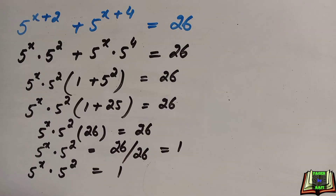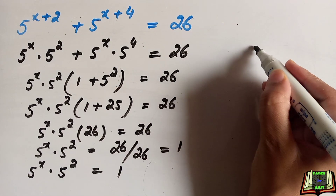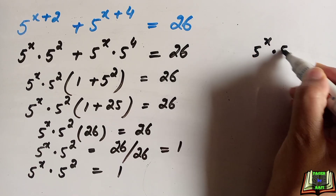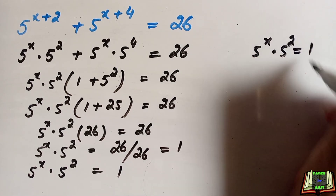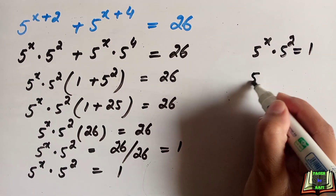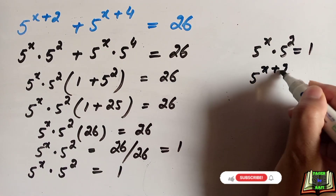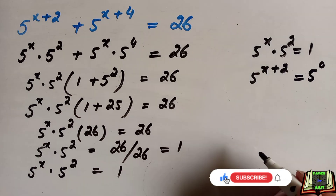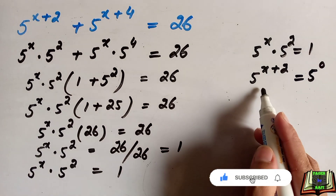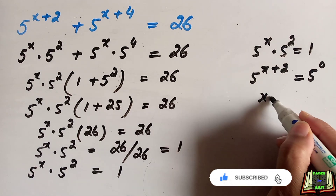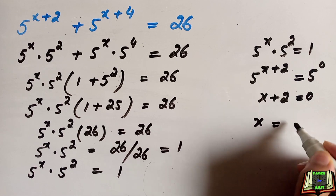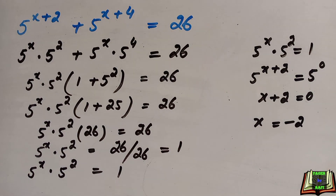We are left with 5 to the power x into 5 to the power 2 equal to 1. We can write this as 5 to the power x plus 2 equals 5 to the power 0, because any number to the power 0 equals 1. Since the bases are the same, the powers must be equal, so x plus 2 equals 0, giving x equals minus 2.